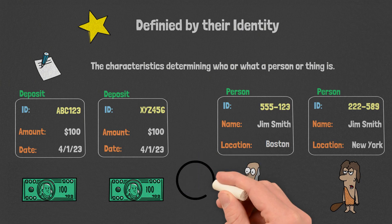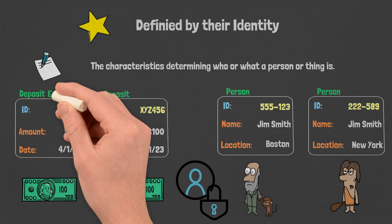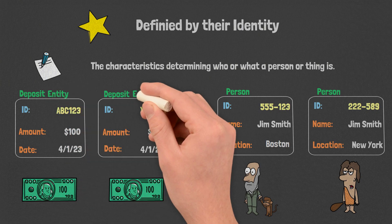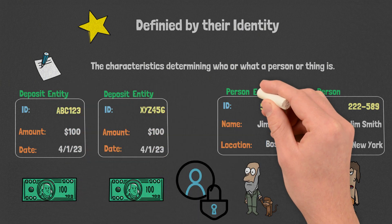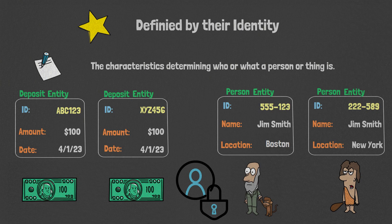Identities are constant. While the attributes of these objects can and will change over time, their identities do not. Your identity fundamentally cannot change — it is immutable. These are still the same people and the same transactions. When an object is defined by its identity, we should model them as entities in our domain.